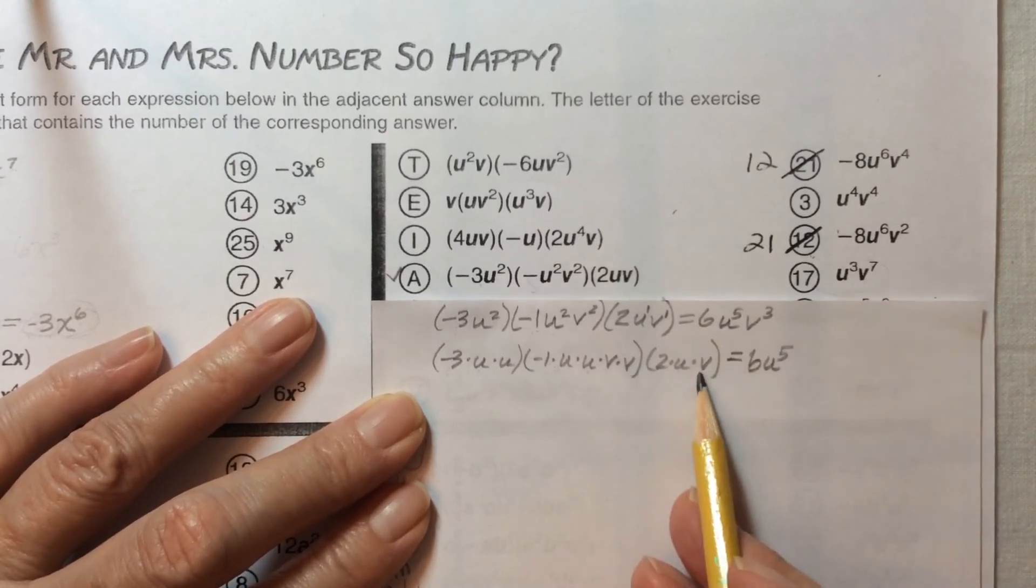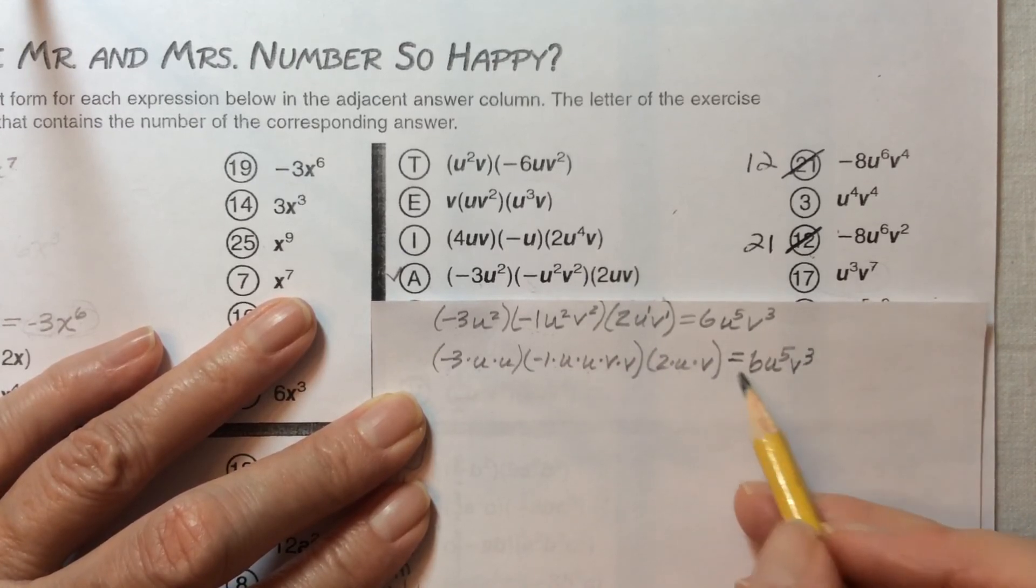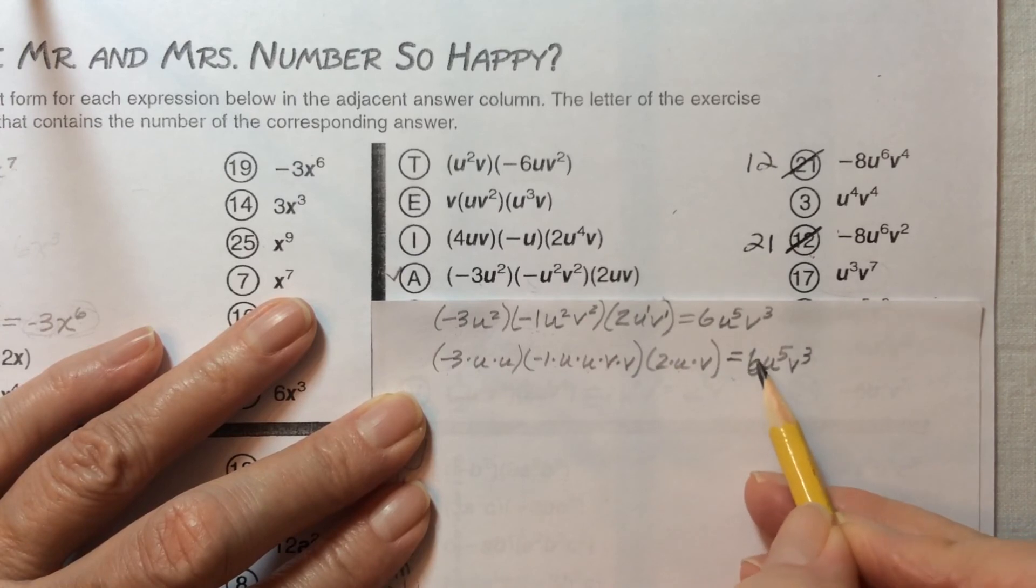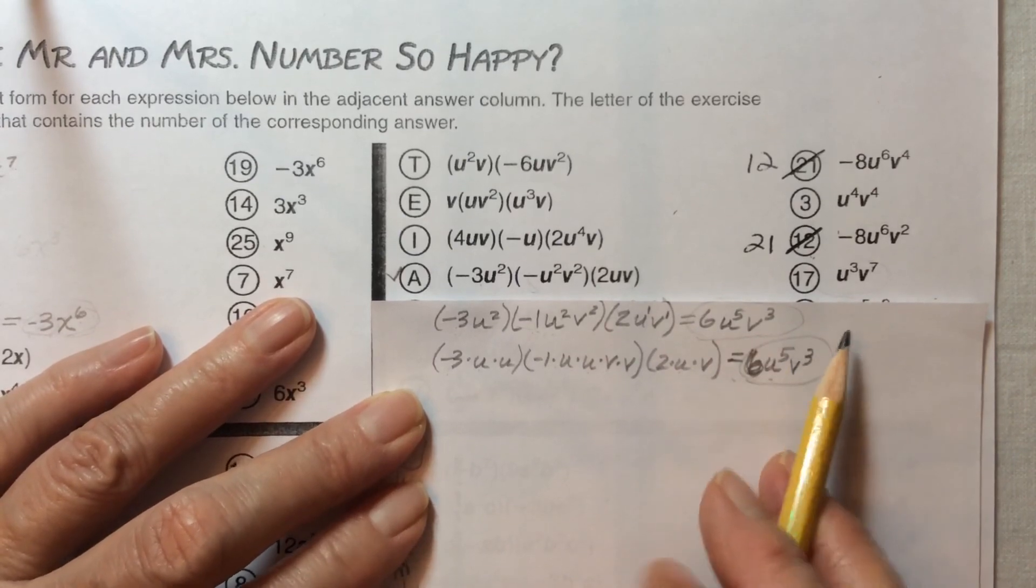And for v: 1, 2, 3. Three v's multiplied together is v to the third power. If we look at what we got by multiplying our factors and what we got using our shortcut, it's the same thing. So that works as an answer.